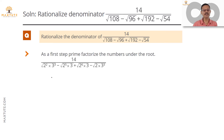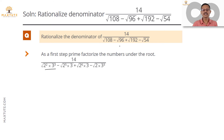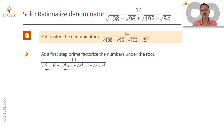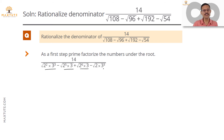In the printed recap: we prime factorize the denominator. 108 is 4 into 27, which is 2 squared into 3 cubed. 96 is 32 into 3, which is 2 to the power 5 into 3. 192 is 64 into 3, which is 2 to the power 6 into 3. 54 is 27 into 2, which is 2 into 3 cubed.